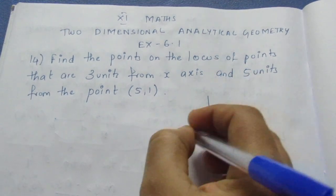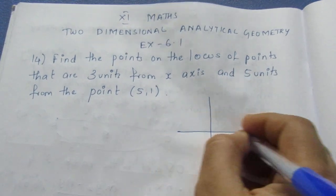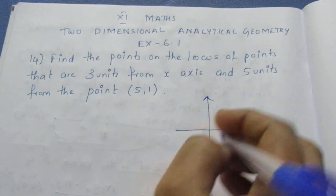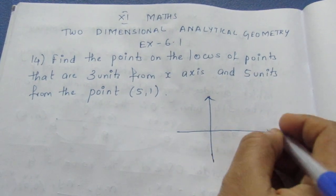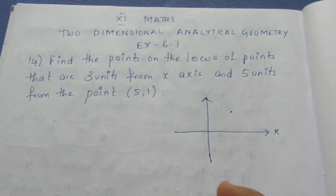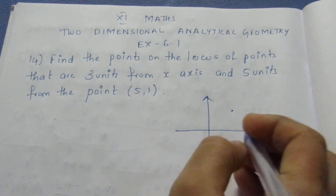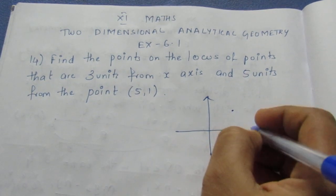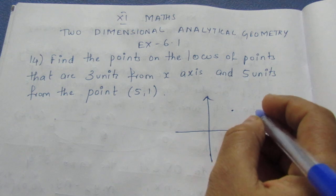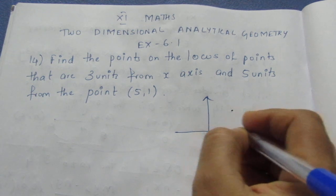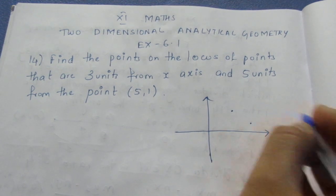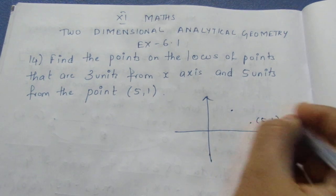Now, this is the locus of a point. We usually say P, which is 3 units from the x-axis. This is the x-axis. The x-axis is 3 units. There is a point. This is 2 units. This is the point (5,1).